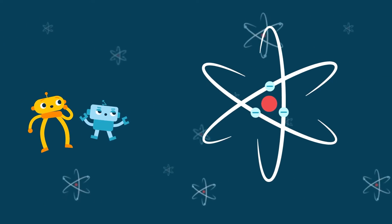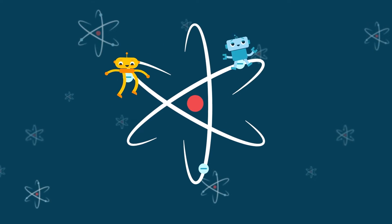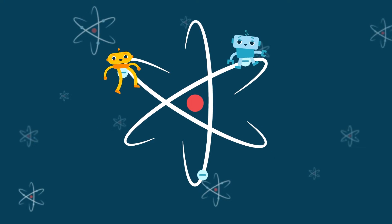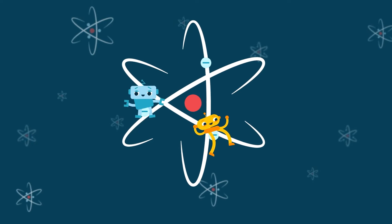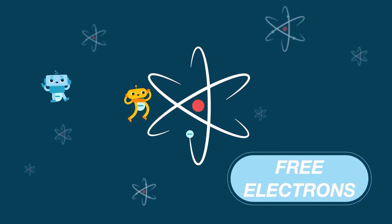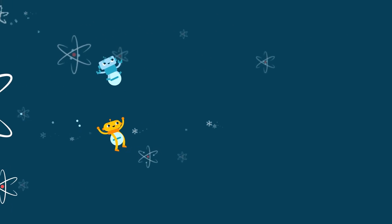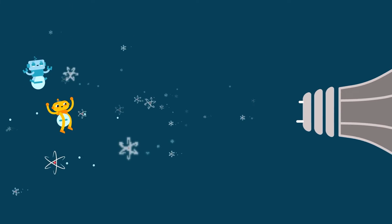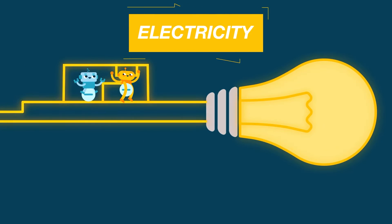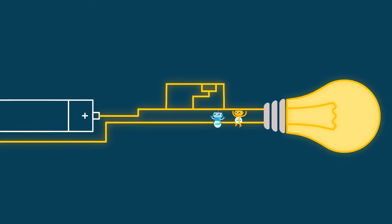Everything in our world is made up of tiny bits of matter called atoms. An electron is a tiny invisible particle with a negative charge. The negatively charged electrons circle the nucleus of those atoms, but some electrons are only weakly attached — they're called free electrons because they can jump from one atom to another. When they jump along the atoms that make up an electrical wire, an electric current is produced.